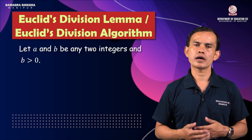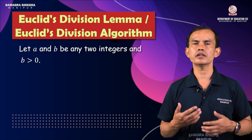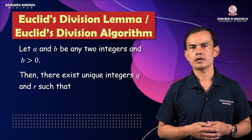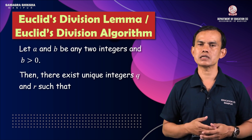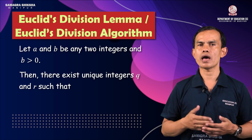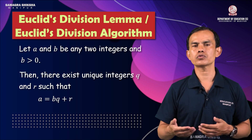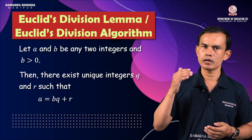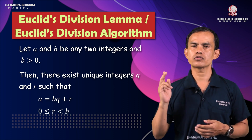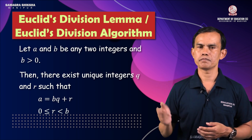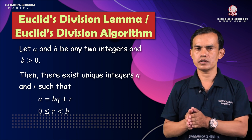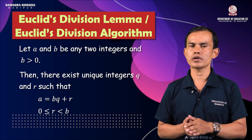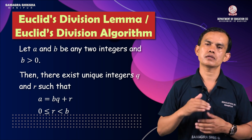Then there exist unique integers q and r such that a = bq + r, where 0 ≤ r < b. The r value is 0 or greater, but always less than b — compulsory.